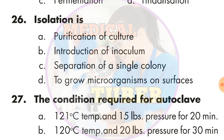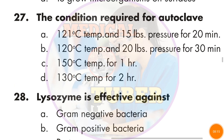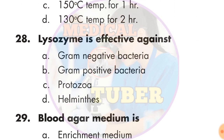Question number 26: Isolation — the correct answer is C — separation of a single colony. Question number 27: The conditions required for autoclave — the answer is C — 158 degrees Celsius temperature for one hour.